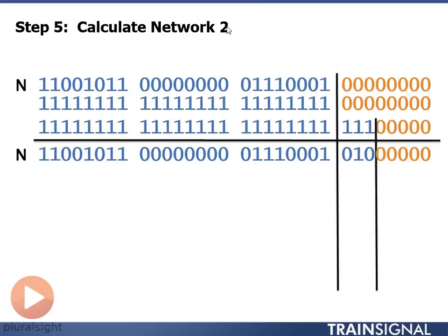I convert two to binary, stick it in my borrowed bit section, I then put all zeros in my host portion, the last five bits, and now I have my network address for network number two.